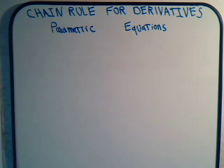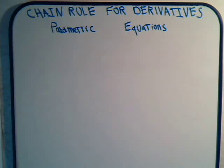In this video we want to talk a little bit about parametric equations and how you can apply the chain rule to them to obtain derivative expressions that you can't get immediately from looking at what equations you have. A parametric equation essentially is when you introduce a third variable.